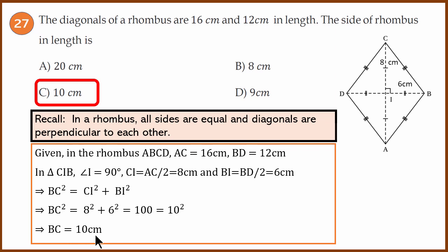In a rhombus, all sides are equal and the diagonals are perpendicular. The Pythagoras theorem is used to solve this problem.